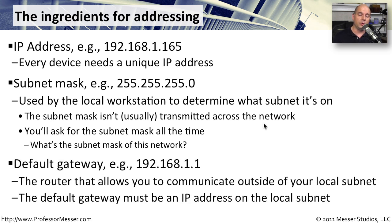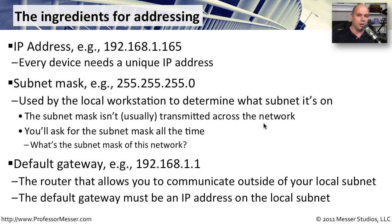If you're just communicating on a local subnet, all you need is an IP address and a subnet mask. But very often we need to communicate outside of our subnet — onto the internet, for instance. To do that, we must also configure a default gateway on our device. This is used in conjunction with your IP address and subnet mask to determine where traffic goes when it needs to leave our subnet. It's the device we talk to when communicating outside the local subnet.